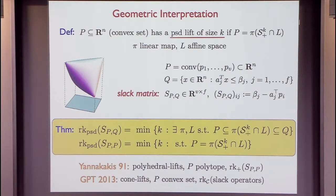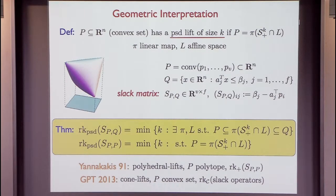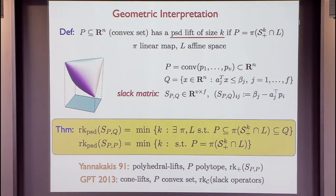The history: Yannakakis proved in 1991 that the non-negative rank of the slack matrix equals the minimum K such that P is the projection of a polyhedron from a slice of the non-negative orthant. We generalized this to arbitrary convex sets and arbitrary cone families, replacing PSD rank with cone ranks. The message: if you want to know the size of the smallest PSD lift, you need to know the PSD rank of the slack matrix.